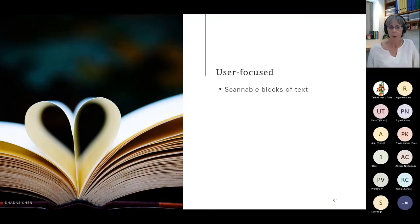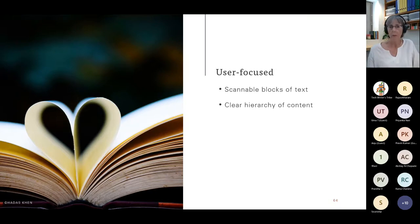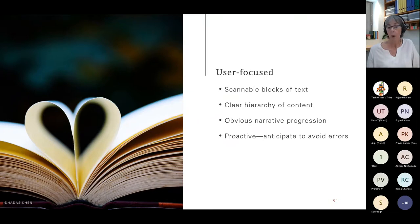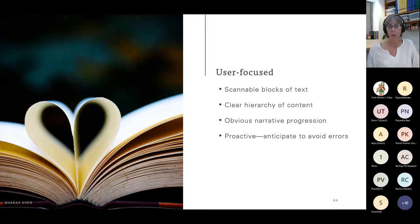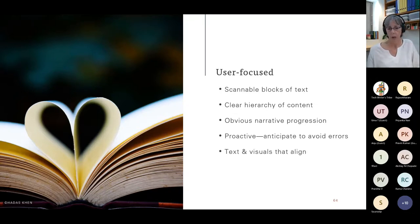We're user-focused. We want to give them scannable blocks of text — just as this applies to technical writing or knowledge-base writing, it also applies to UX writing. We want a clear hierarchy of content and an obvious narrative progression; the next step should be clear. We want to be proactive and anticipate in order to avoid errors — for instance, instead of saying 'upload files,' say 'upload up to three files' or 'upload up to two megabytes worth of files.' We want our text and visuals to align, and we want the text to reflect the user's feeling and where they are in the user journey.